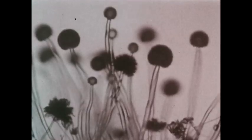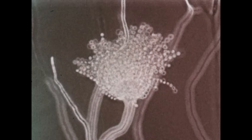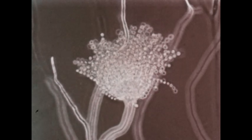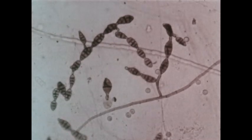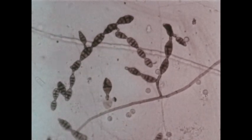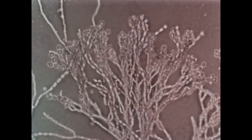Every variety of mold produces spores, but each variety has a characteristic shape and color. Each variety produces spores which may grow and form a new colony.